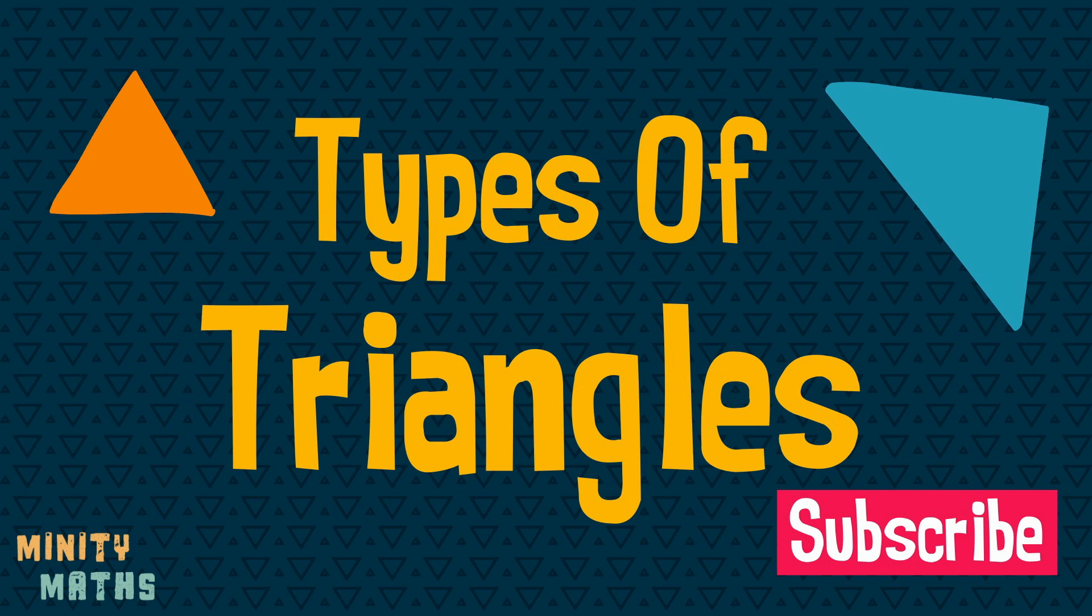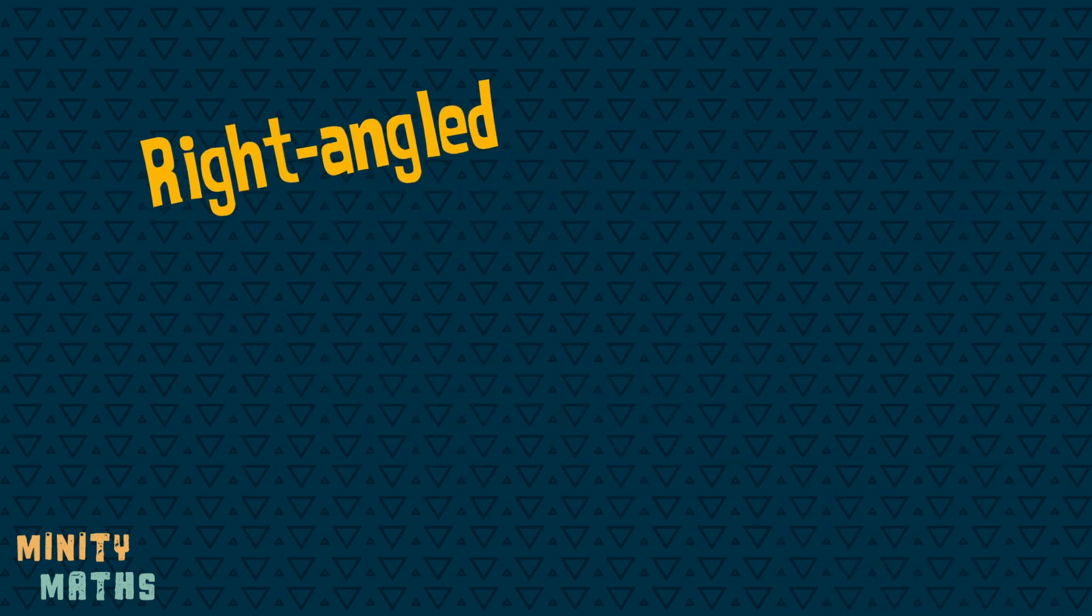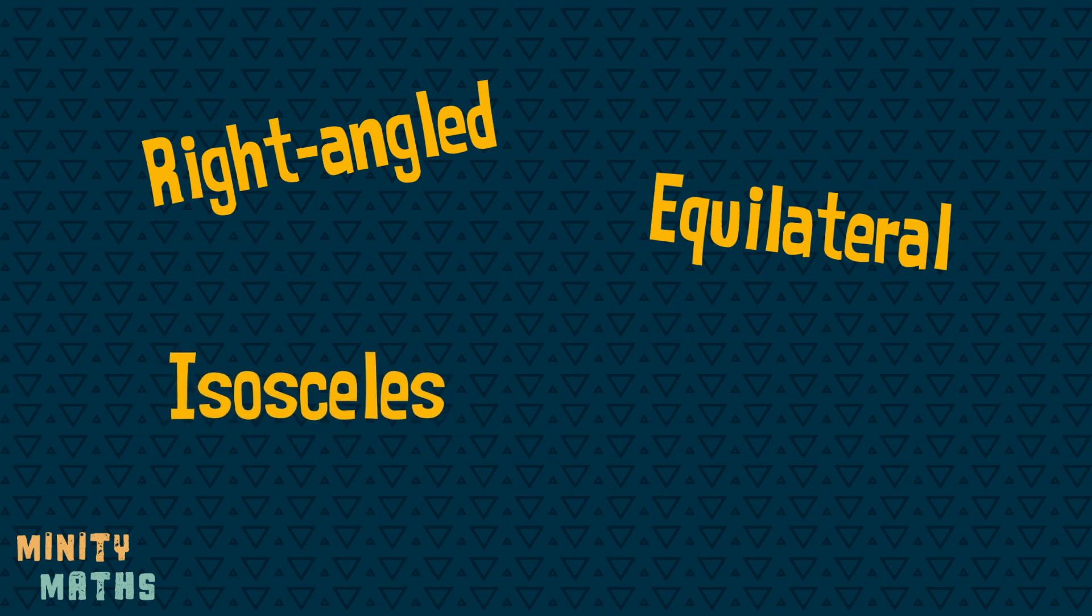Triangles are three-sided shapes. There are four types: right-angled, equilateral, isosceles, and scalene triangles.